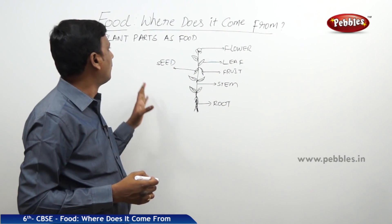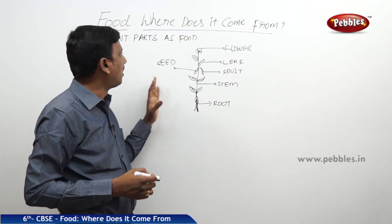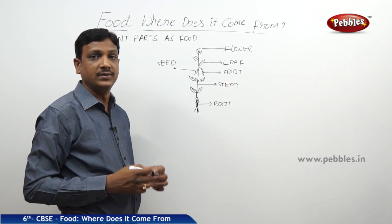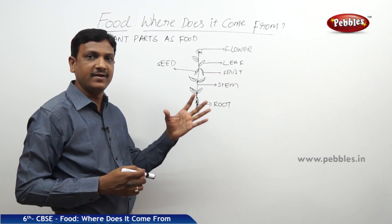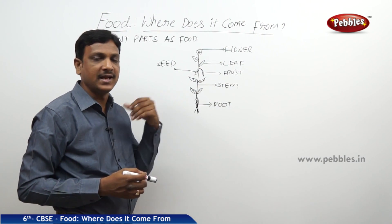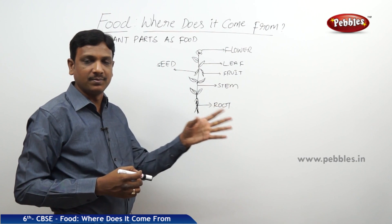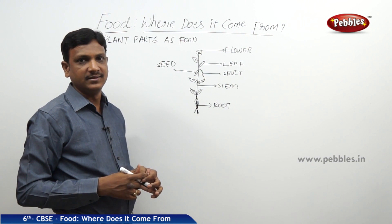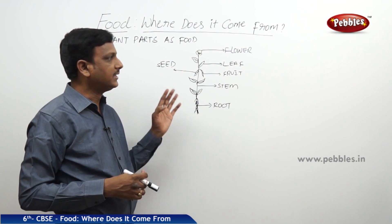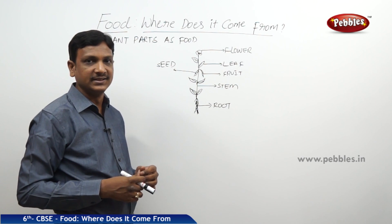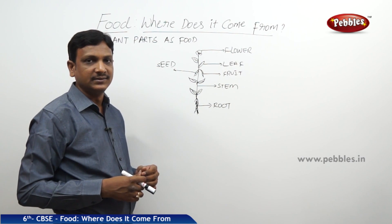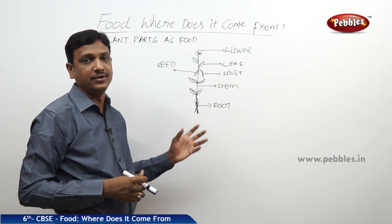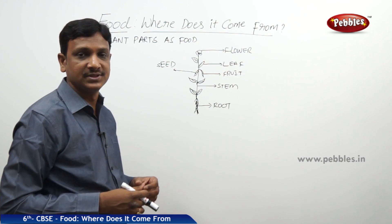Now let us see in detail about plant parts as food items. We discussed that the ingredients we get come from plants and animals. So the sources are plants and animals. Now let us see the ingredients that we get from a plant, and how different parts of a plant are used as food items and ingredients.